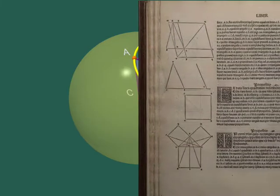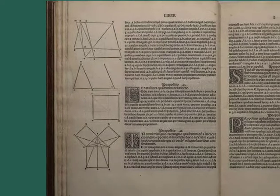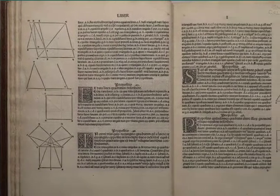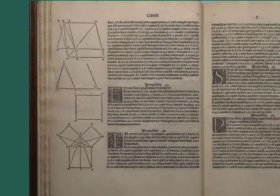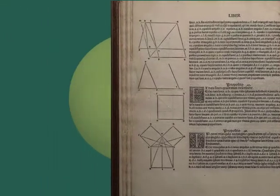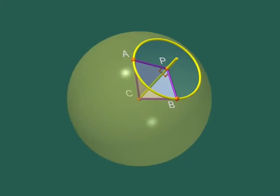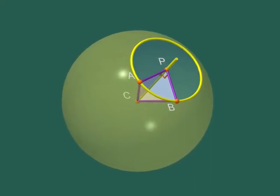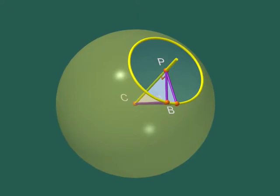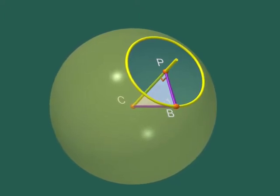But remember Pythagoras' theorem. Since our two right angle triangles have two sides of the same length, their three sides must have the same length. Hence, we have proved that PA and PB have the same length. That is, that A and B are on the same circle with centre P, in the blue plane.